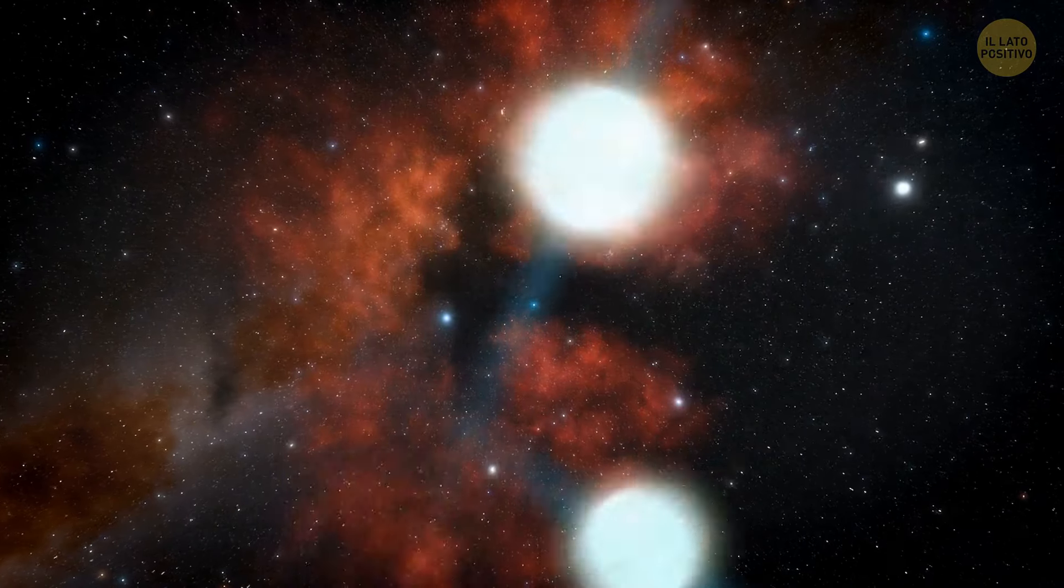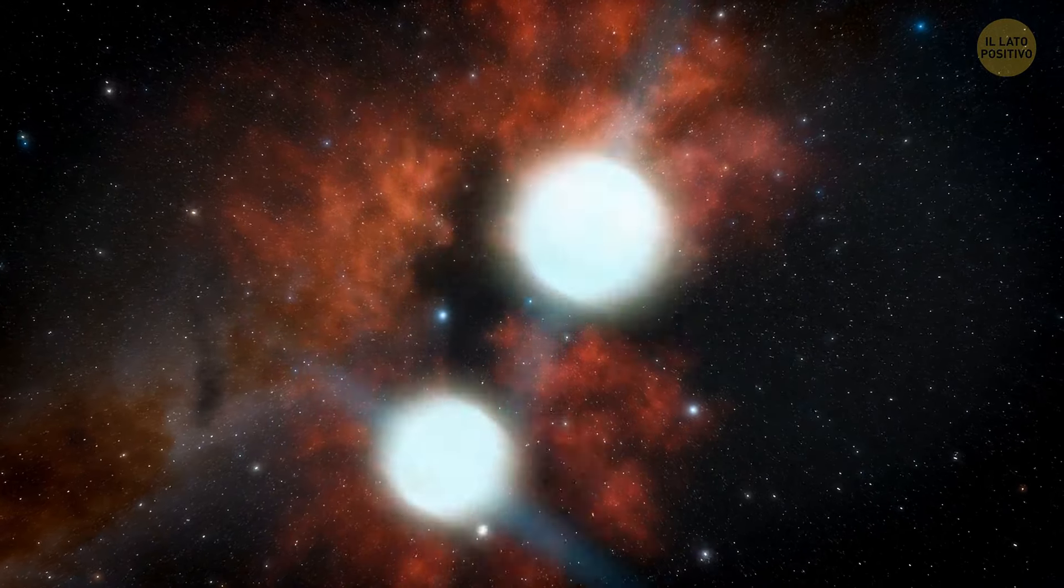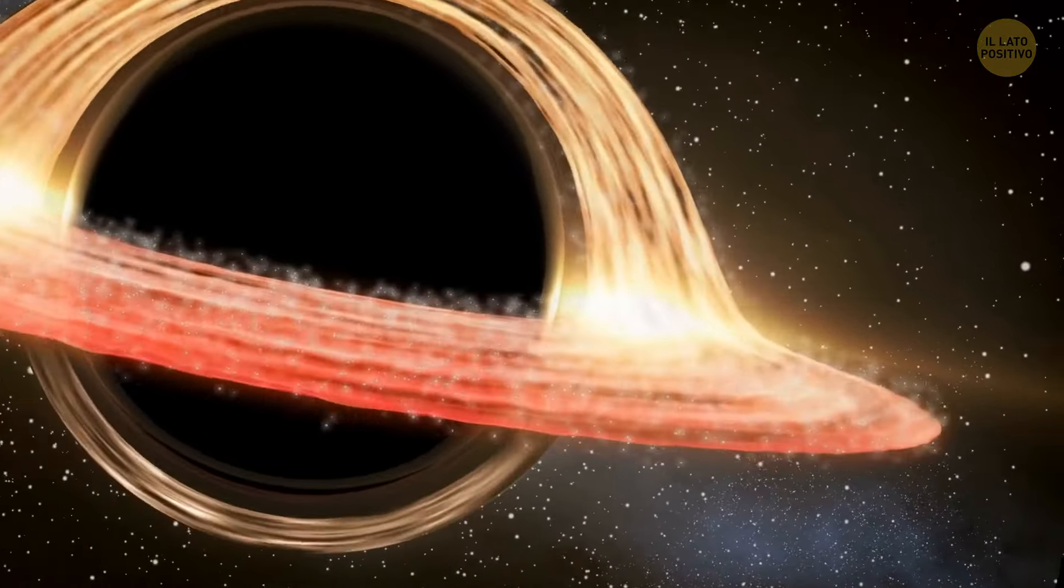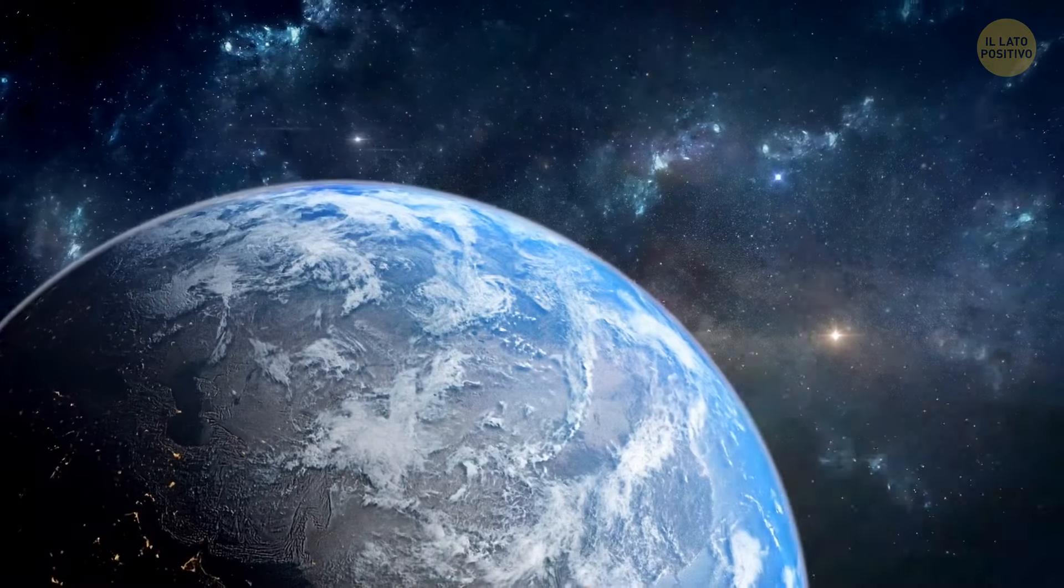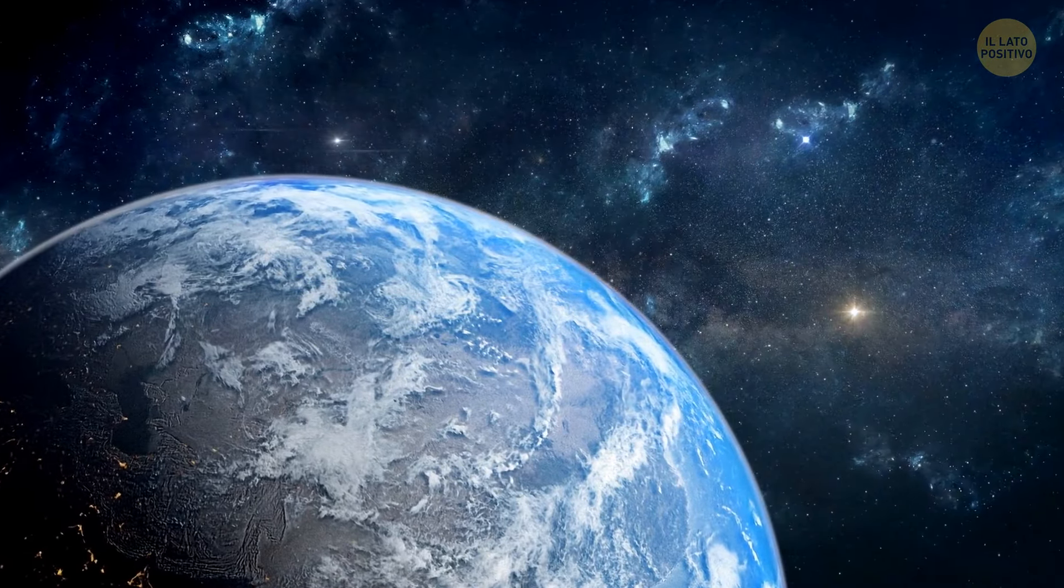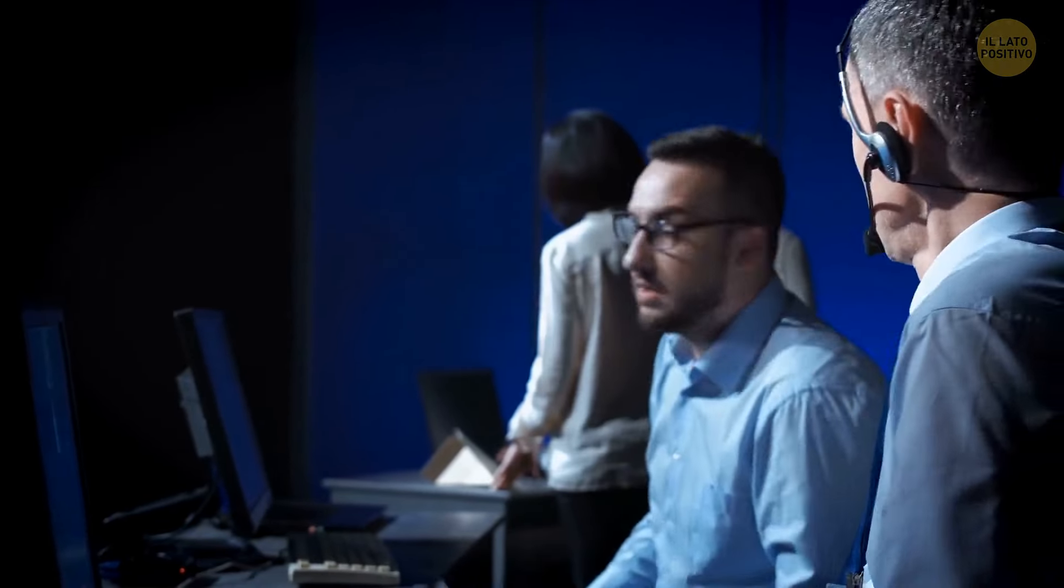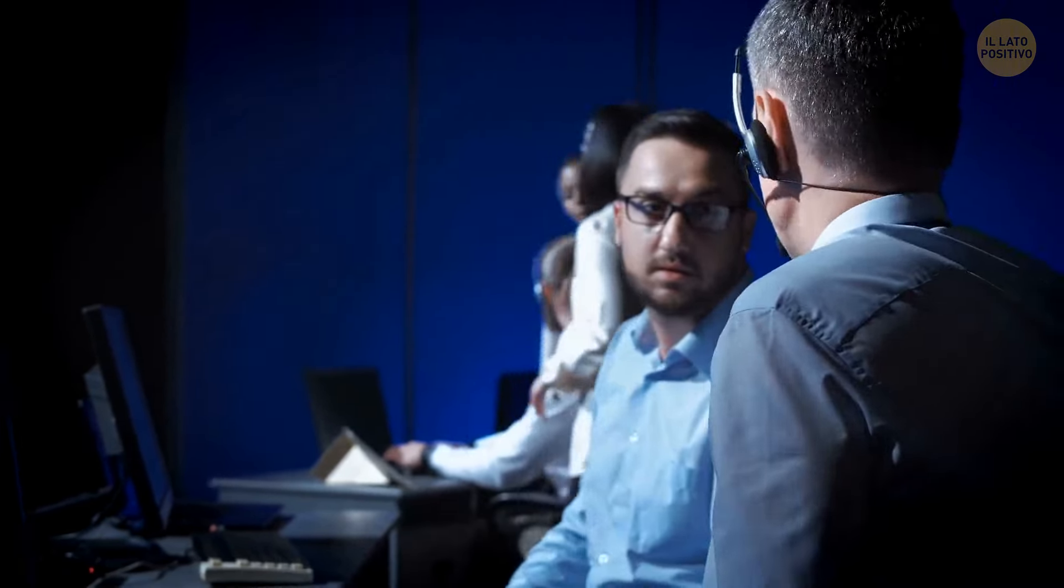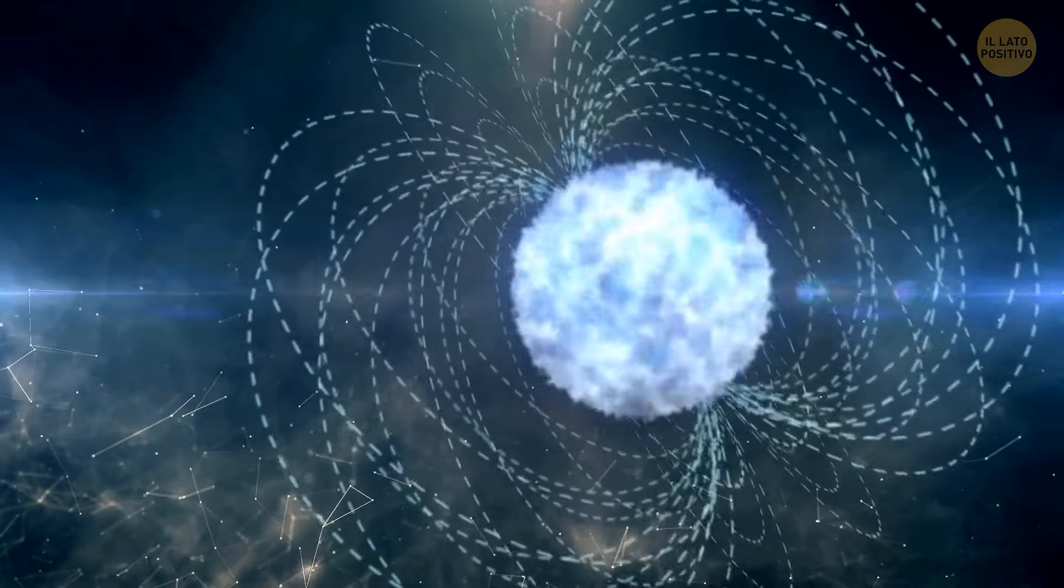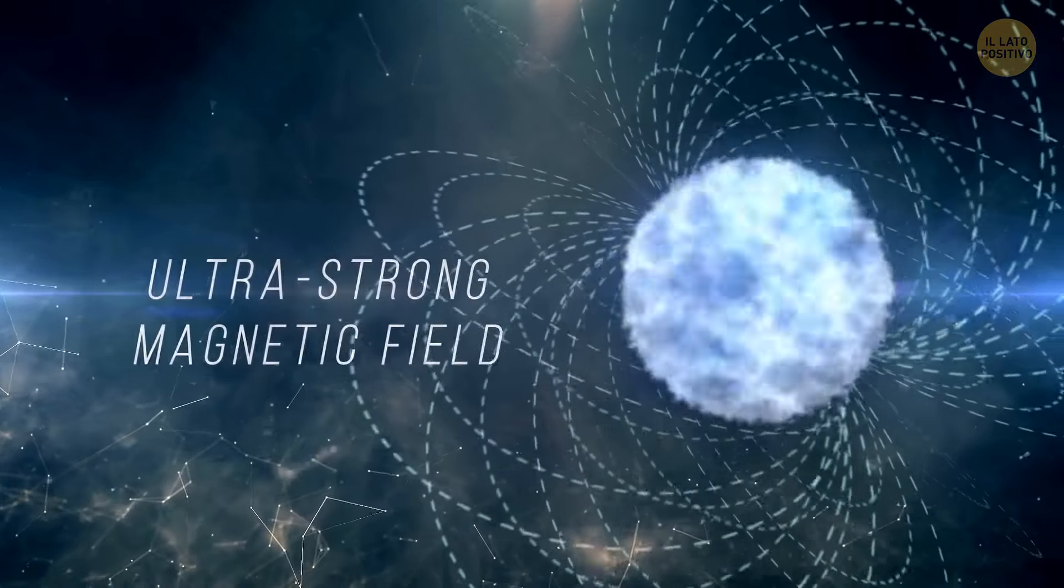When two neutron stars merge, they most often create a new, much heavier one. Within milliseconds or even less, this star collapses into a black hole. But the astronomers who examined the flash of light recorded in March think there might be another outcome. They're almost sure they saw something never observed before, the birth of a magnetar. That's a rare form of a neutron star with an ultra-strong magnetic field. It's 1,000 trillion times stronger than our planet's.